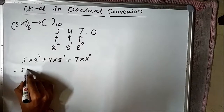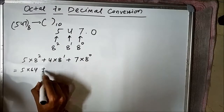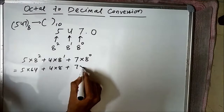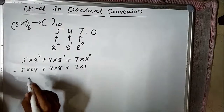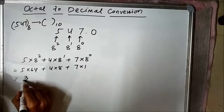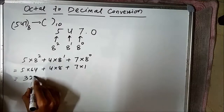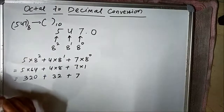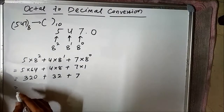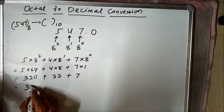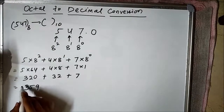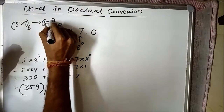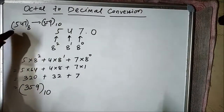This is equal to 5 into 64, plus 4 into 8, plus 7 into 1, which is equal to 320 plus 32 plus 7, giving us 359. So 547 in base 8 is equivalent to 359 in decimal form.